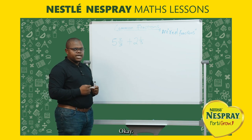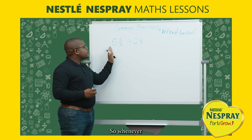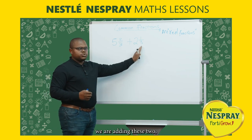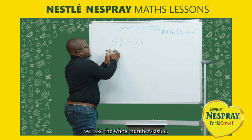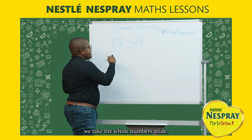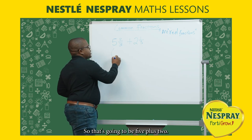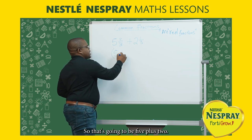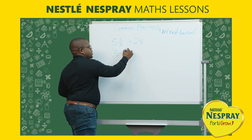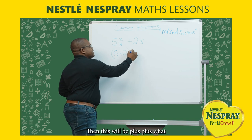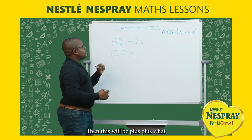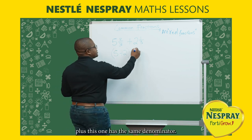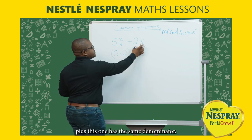Whenever we are adding these two, we take the whole numbers aside, so that will be five plus two, then plus — this one has the same denominator.